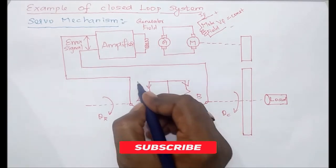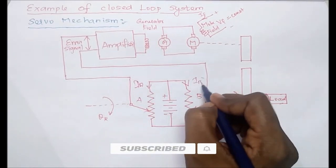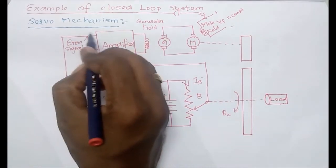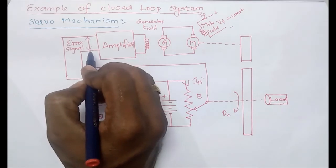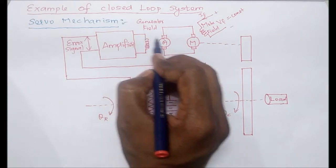Both currents are the same. Suppose this is Ia, this is Ib. Both are the same. It means the reference value and actual value are both the same, so error equals zero.